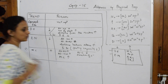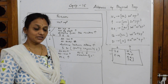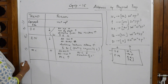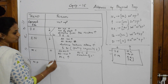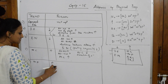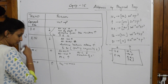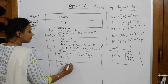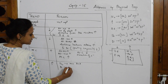Melting point increases down the group. So nitrogen will have the minimum melting point and bismuth will have the maximum melting point. When we speak about increasing down the group, nitrogen being at the top has the minimum MP and bismuth at the bottom has the maximum MP.